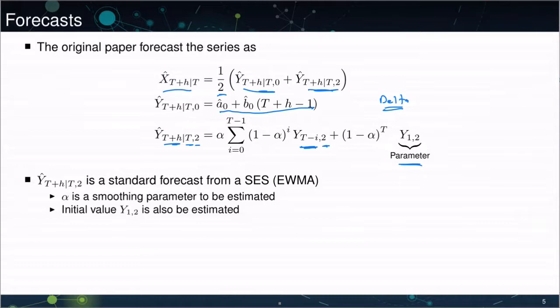So at the end of the day, this is just a standard SES, but not using the original X's, but instead using the Y's that you get from the theta line when theta is equal to 2. But both of these are direct and simple to forecast, so there's nothing particularly challenging here.